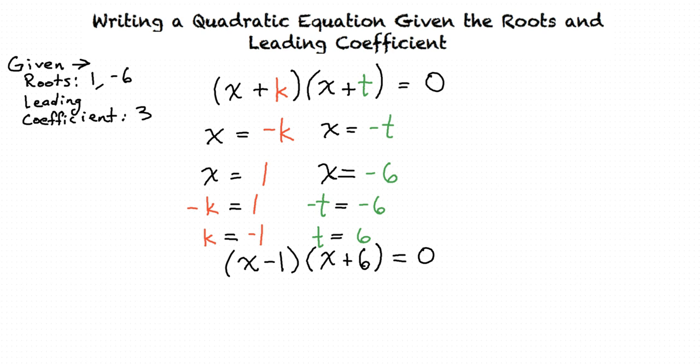Let's first expand the two factors by using FOIL. Doing this yields a result of x² + 5x - 6 = 0.